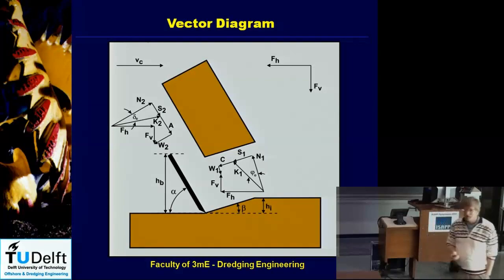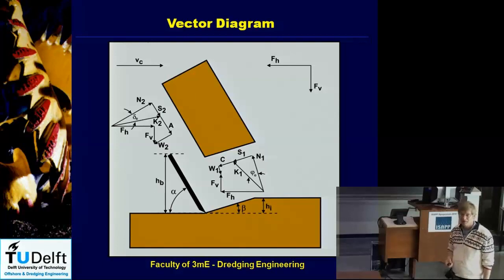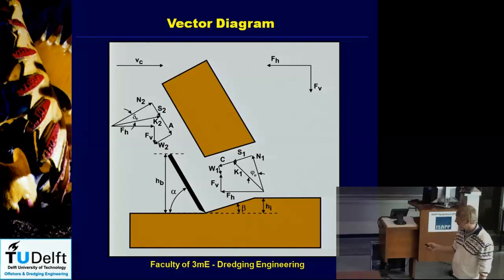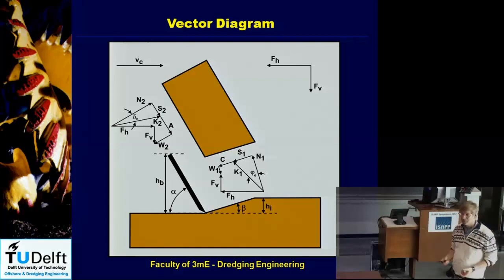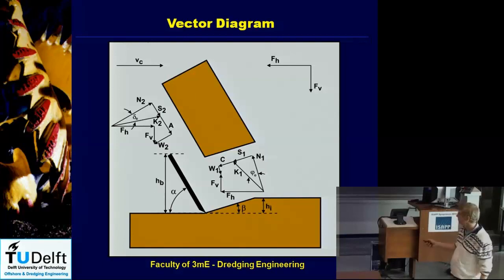This picture shows some of the forces — the gravity force and inertial force are neglected, but the other forces are still there. You can see N1, S1, C, and W1, and how those forces can be combined in a vectorial way. The resulting force should equal the vectorial sum of the horizontal and vertical force.